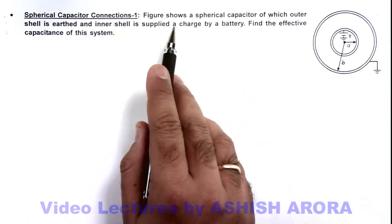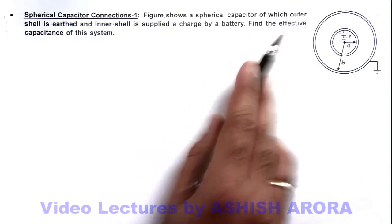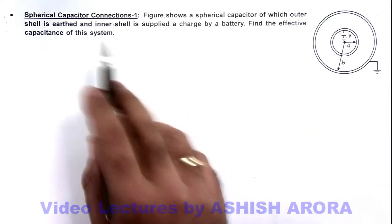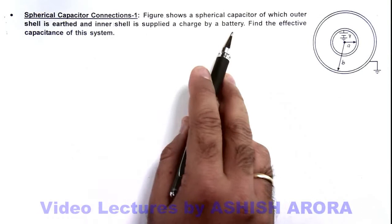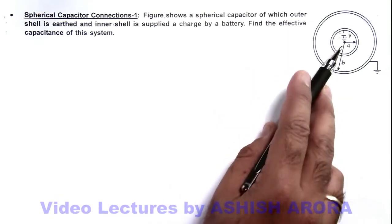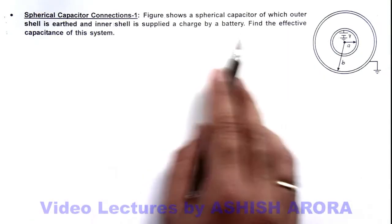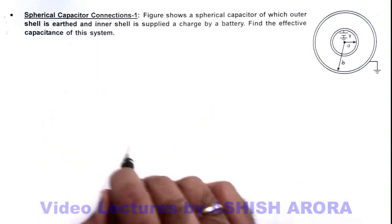The figure shows a spherical capacitor of which outer shell is earthed and inner shell is supplied a charge by a battery, of which one terminal is also connected to earth. We are required to find the effective capacitance of this system.